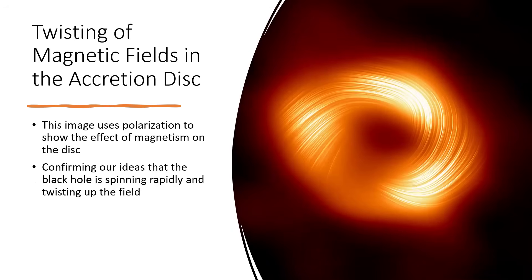They've improved on it more recently by looking at the polarization of the light. For an object 27,000 to 30,000 light years away, we are seeing amazing detail in the accretion disk — the twisting of the magnetic field caused by the rotation of the central black hole. As material falls in, angular momentum is retained, and like a skater pulling their arms in, the black hole ends up spinning very rapidly. This causes jets to emerge as the spinning magnetic field hurls material out along the field lines at the poles.